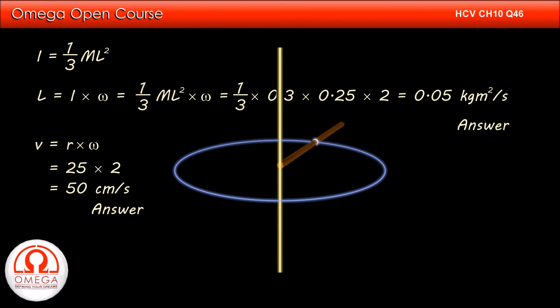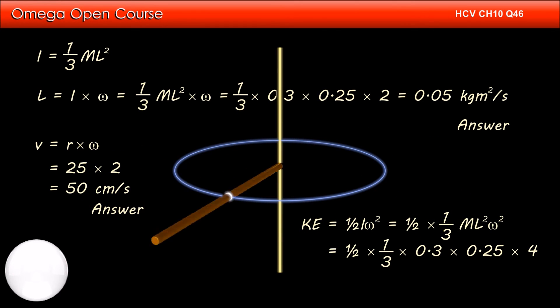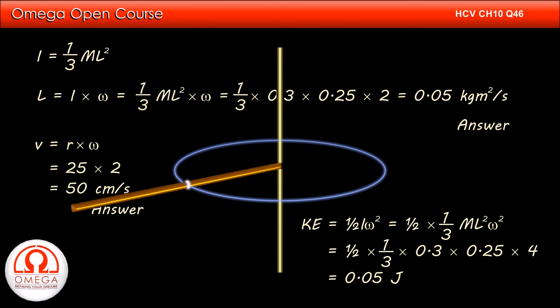The kinetic energy of a body undergoing pure rotation is given by (1/2) × moment of inertia about the axis of rotation × angular speed squared. Thus kinetic energy of the rod is (1/2) × (1/3)ML² × ω². Putting the values, we get (1/2) × (1/3) × 0.3 × 0.25 × 4. Simplifying, we get 0.05 joules. This is the answer to part C of the question.